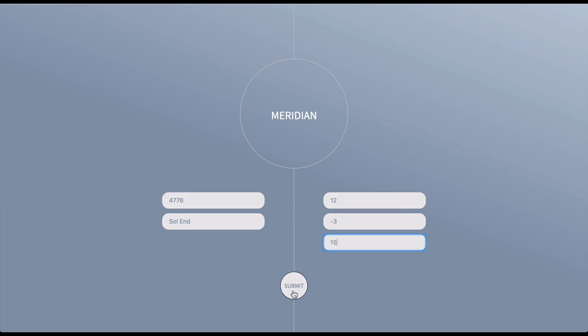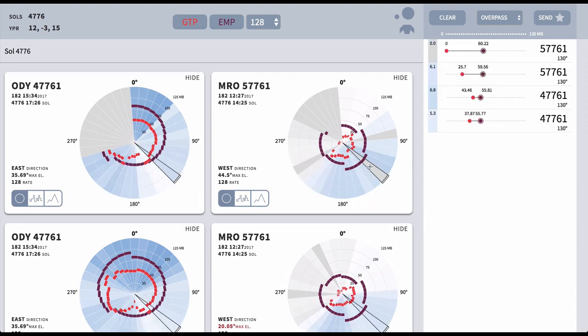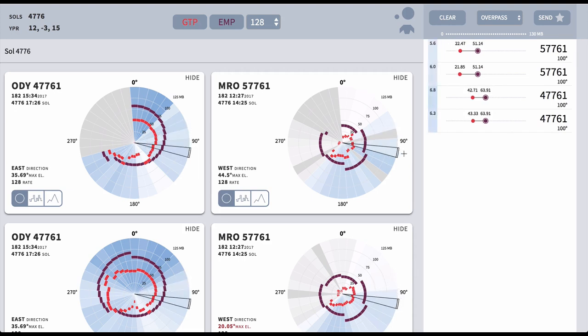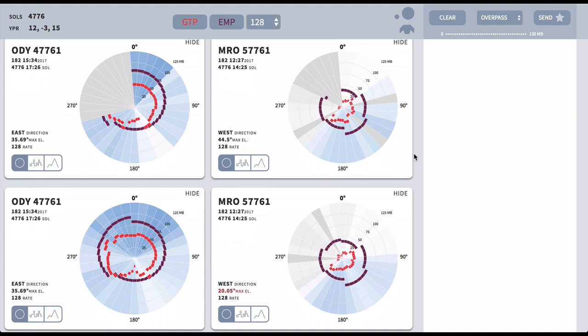The interface then populates with polar plots that display information about overpassing satellites the rover might connect to. The polar plots display estimates about the amount of data that can be transferred for each of the satellite overpasses at all rover orientations.